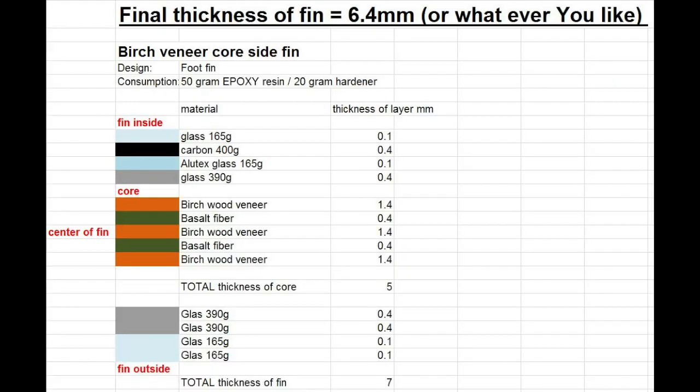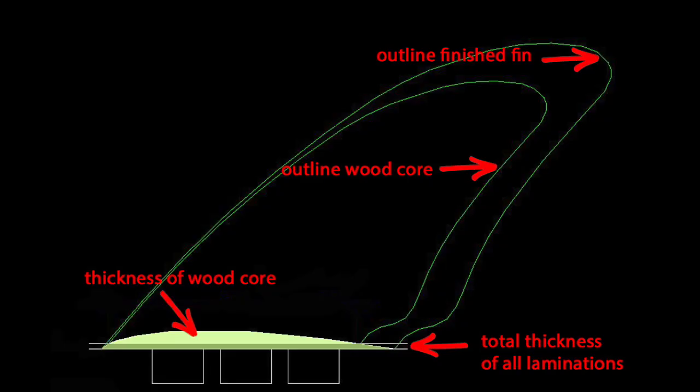Here you can see how I built up the red football fin that you could see earlier on in the picture with all the fins. This time I didn't use plywood for the core. I made the core myself out of veneer layers and layers of basalt fiber that I laminated together and pressed. Here you can see a more accurate drawing that shows you how to figure out the actual size of the wooden core.